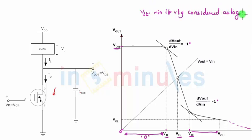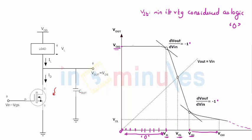Is that true? The answer is no. Here also it's considered as 0, here also, here also — all the way until here. So this is not the minimum. This is the maximum input voltage which will be considered as a logic 0. So we will call this the maximum input voltage. This is the definition of VIL.